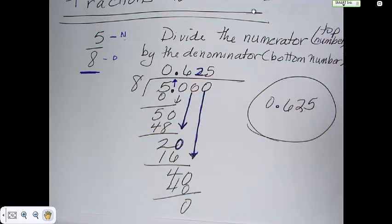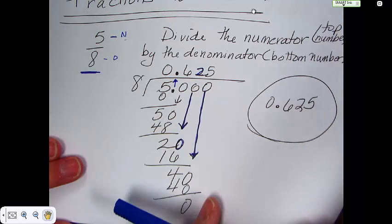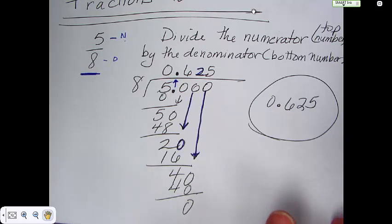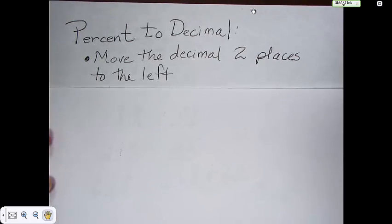We have just taken a fraction and turned it into a decimal. Numerator divided by the denominator. Really simple. Put that in your notes any time you're asked to do that. You're going to know how to do it right away. It won't be hard at all. One last thing I want to talk about. I want to take a percent and turn it into a decimal.